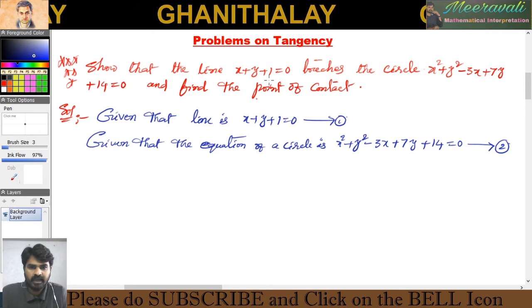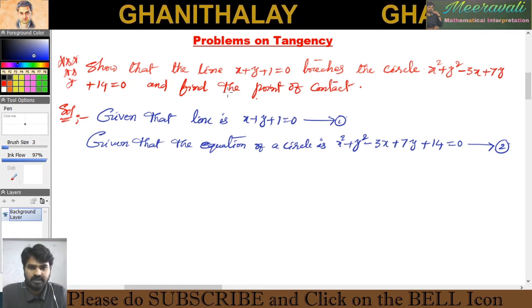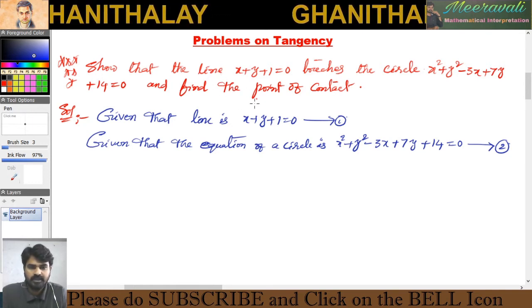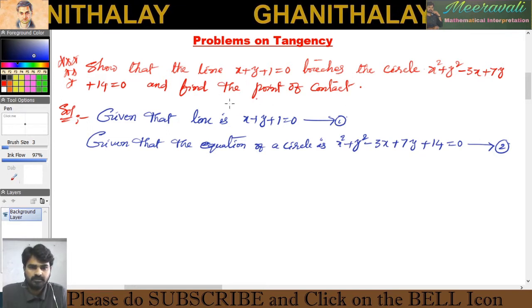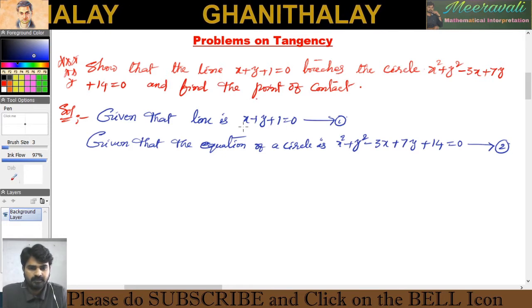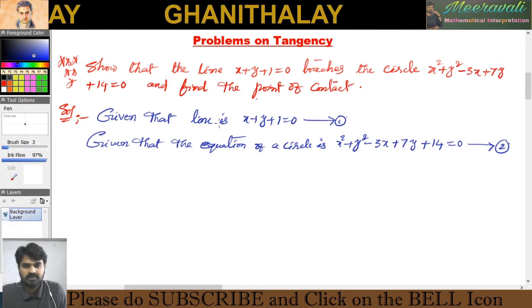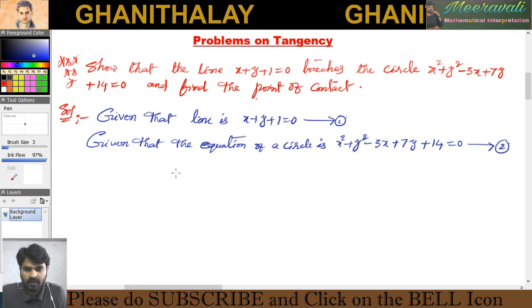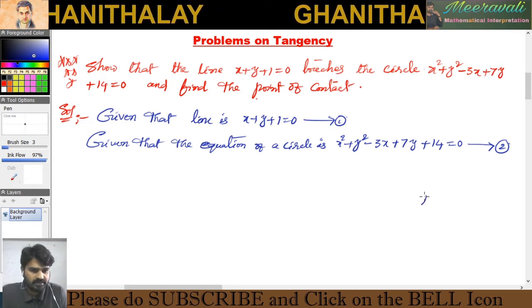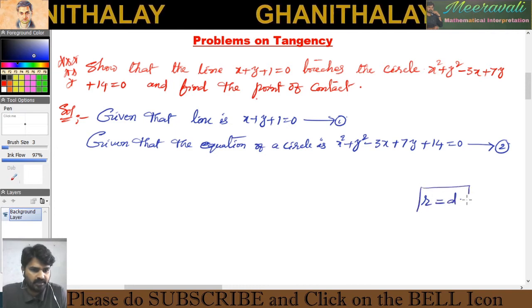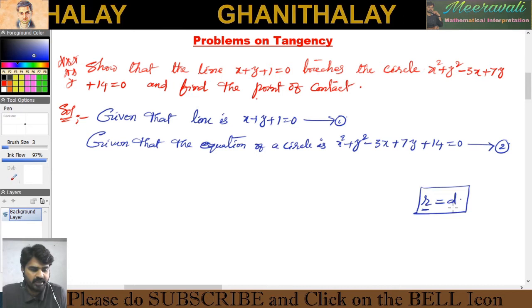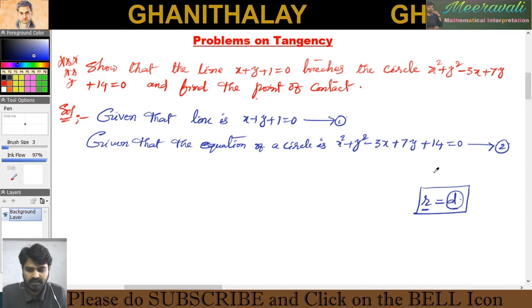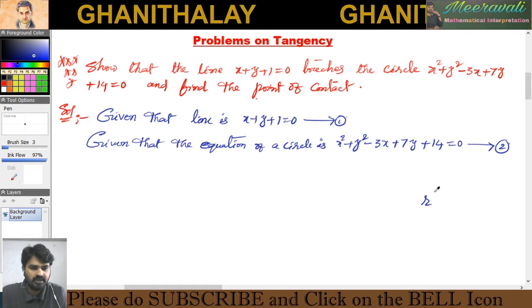I have already done a video for a line touching the circle — the condition is in that video. The link will be given in the description box. Now, we are going to show that this line touches the circle. The general property is r is equal to d, so we first need to find the radius and d, where d is the distance of the given line from the center of the circle. We need to find the center and radius of the given circle.